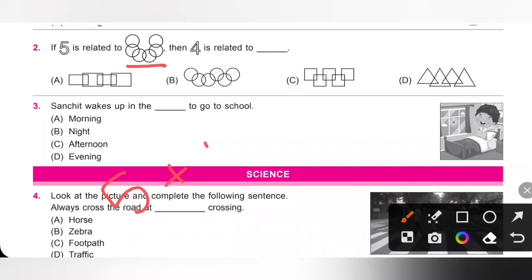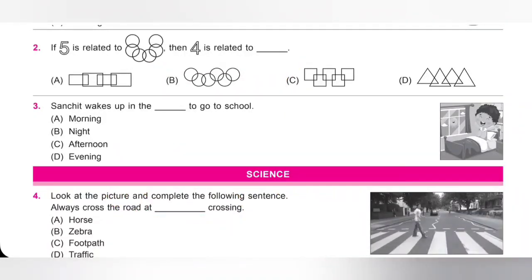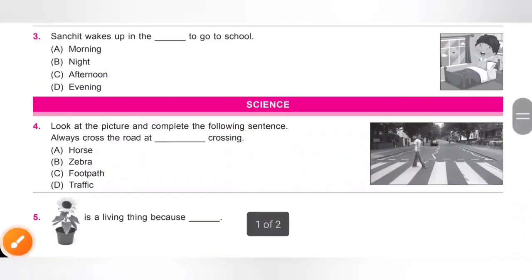so we know 5 plus 1 is 6. Similarly, 4 plus 1 is 5. So 4 is related to any 5 interlocked shapes. That is, option C is the correct answer. Here, 5 squares are there, so option C.